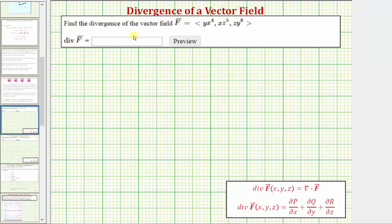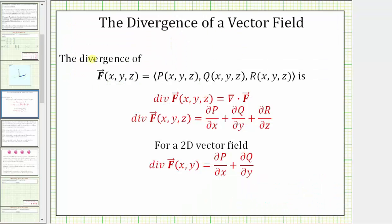We want to find the divergence of the given vector field f. The divergence of the vector field f with components p, q, r is denoted using this notation here, where we say div f equals. As a dot product, we have del, the differential operator, dotted with the vector field f, where this dot product is equal to the sum of these partial derivatives.